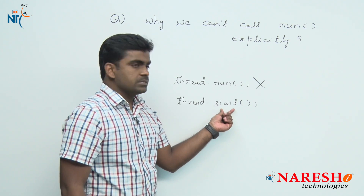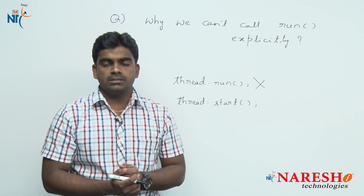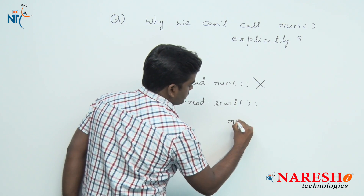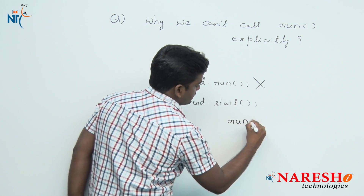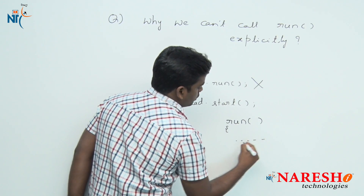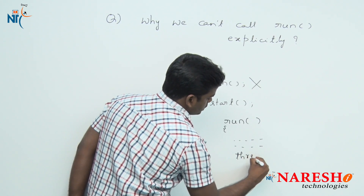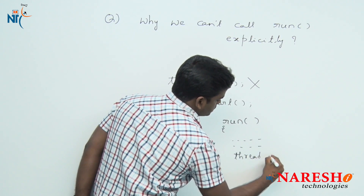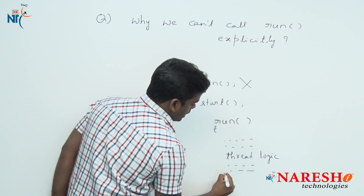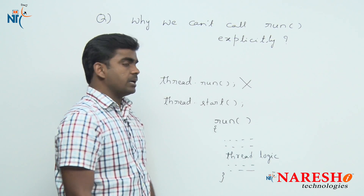Why do we need to depend on the start method? Why cannot we call the run method directly? Remember one thing — inside the run method, you will write only the thread logic, whatever logic you want to execute concurrently. That is what you place inside the run method.